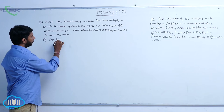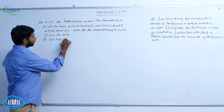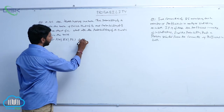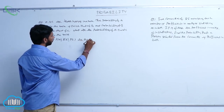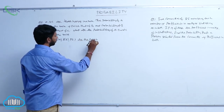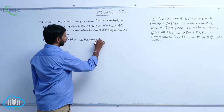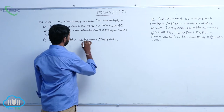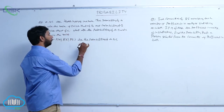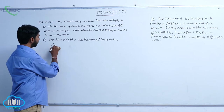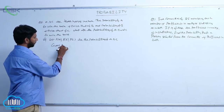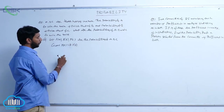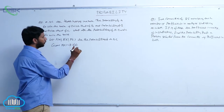Let P(A), P(B), P(C) be the probabilities of A, B, C given. P(A) is equal to twice the probability of B.